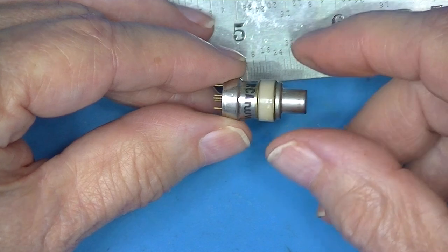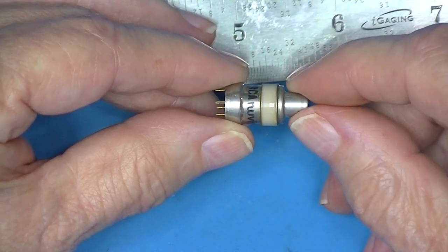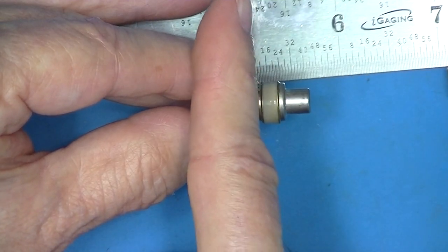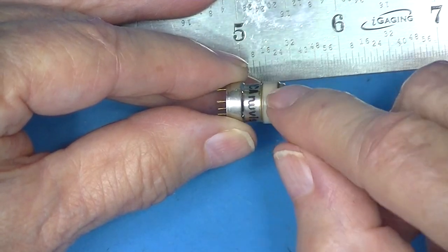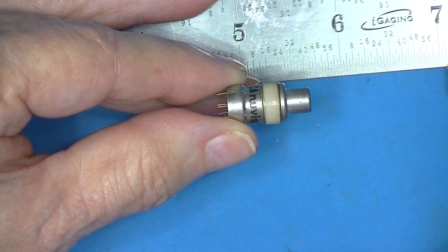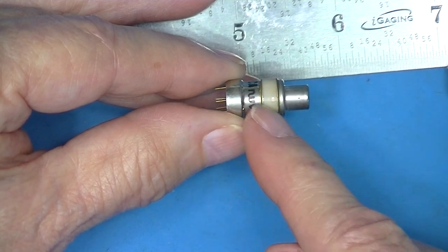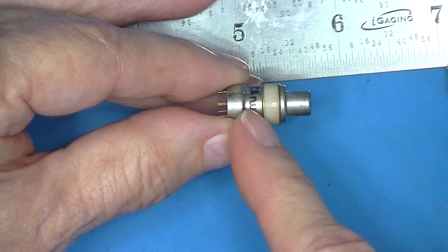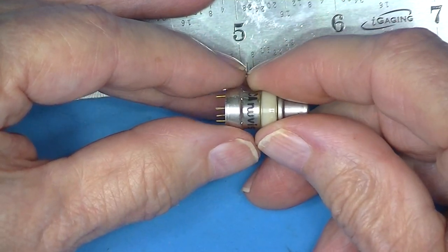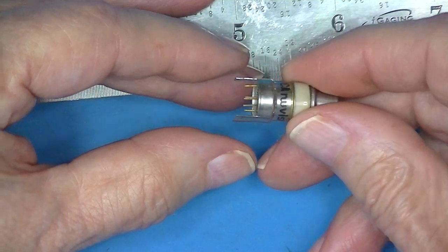I don't believe I ever replaced one of these, but I did tune a broadband amplifier with some of these in it. The amplifier had a steel barrier right here between each stage to reduce capacitive coupling from this end to this end. Now the barrier had a fairly big opening in it because you had to remove the tetrode if you ever had occasion to replace it.